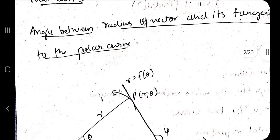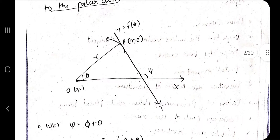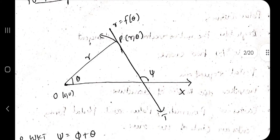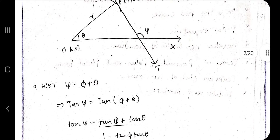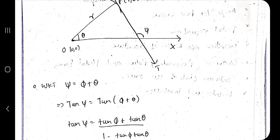What we have to find out is the angle between the radius vector and its tangent — that angle is phi, shown in the diagram. We know that psi = phi + theta. Taking tan on both sides, tan(psi) = tan(phi + theta).